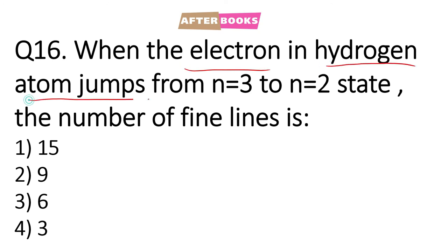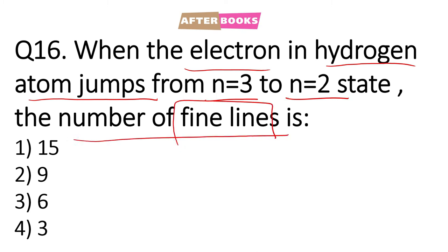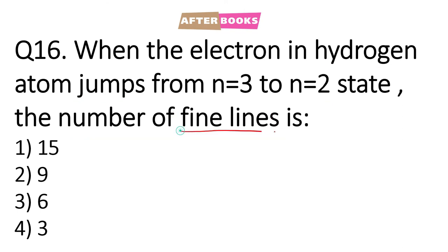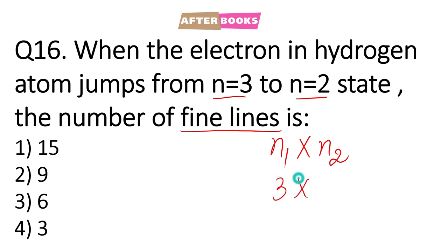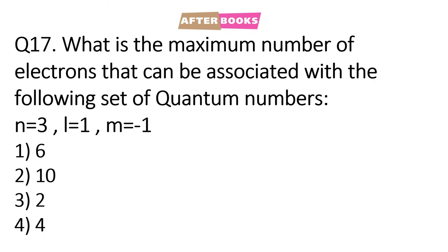Question number 16: When an electron in a hydrogen atom jumps from n = 3 to n = 2, how many fine lines are produced? Fine lines are calculated as n1 × n2, where n1 and n2 are the two given n values. So 3 × 2 = 6, which is option number 3.